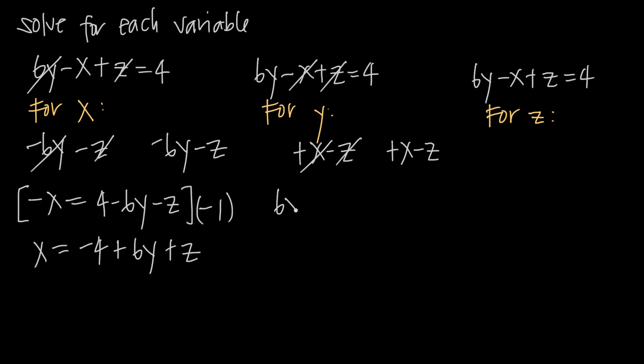Leaving us with only 6y on the left-hand side. And we're trying to get y by itself. So on the right-hand side, we have 4 plus x minus z. Now we still need to solve for y by dividing both sides of the equation by 6. So we get 6 to cancel from the numerator and denominator. 6 over 6 is 1.